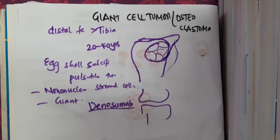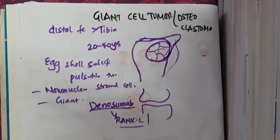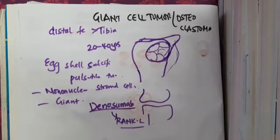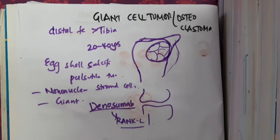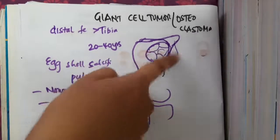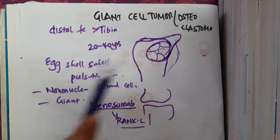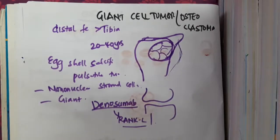Denosumab acts on the RANK ligand. In giant cell tumor — which is an osteoclastoma — there is an increased number of osteoclasts. These osteoclasts have multiple nuclei and combine together to form a giant cell. The osteoclast is actually the macrophage of the bone; it causes bone resorption, removes calcium, and kills cells. This is why on X-ray you will see a lytic expansile lesion due to decreased bone density.